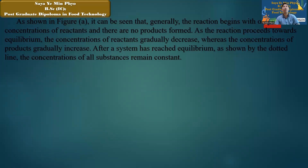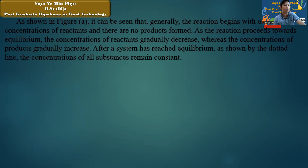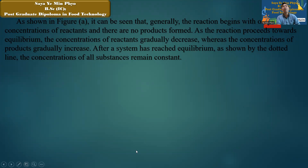Generally, if the reaction begins with only reactants and no products, as the reaction proceeds toward equilibrium, the concentration of reactants decreases whereas the concentration of products increases, until constant concentrations are reached at equilibrium.